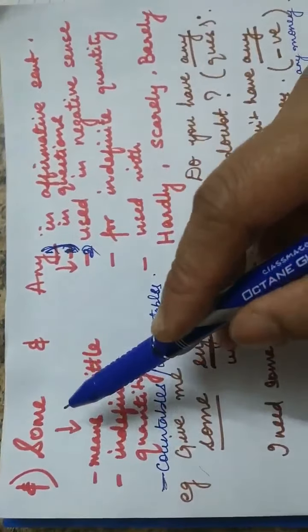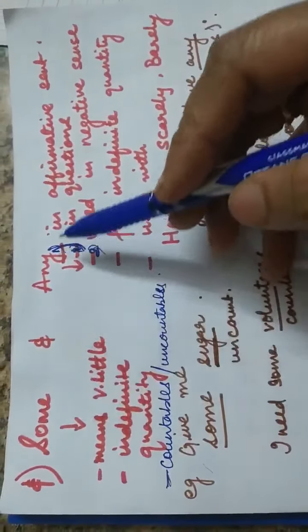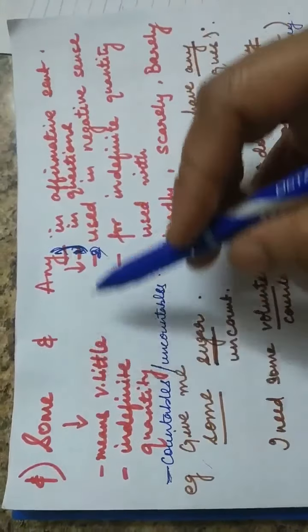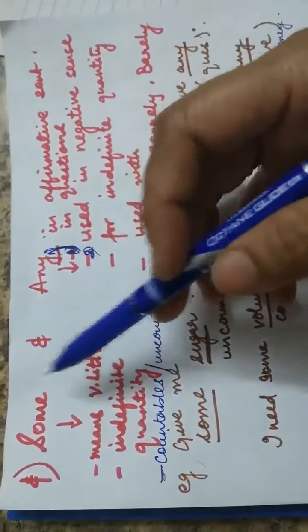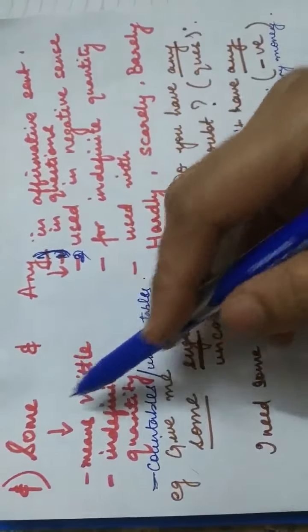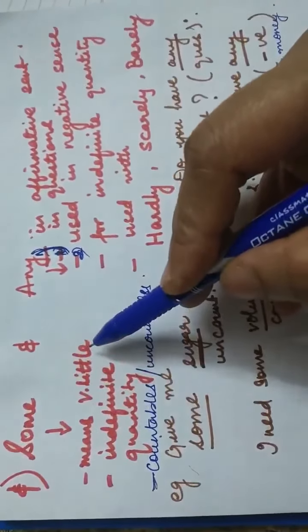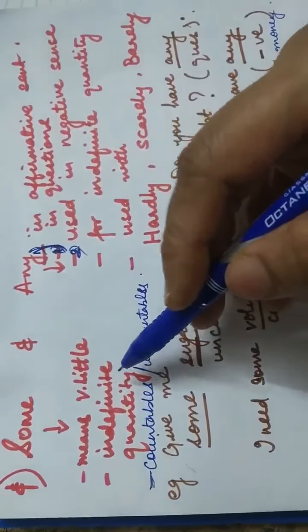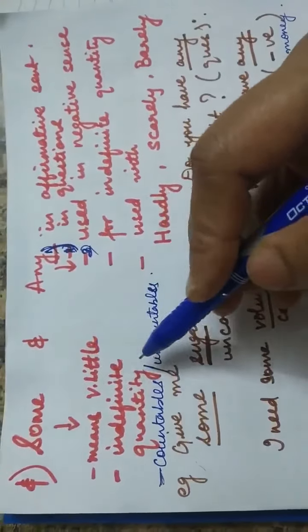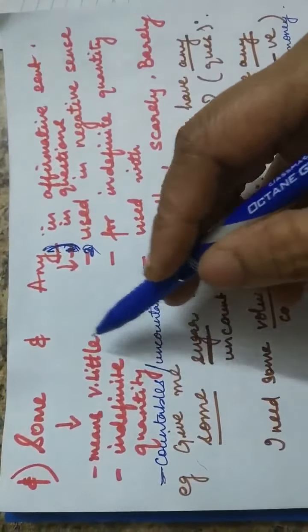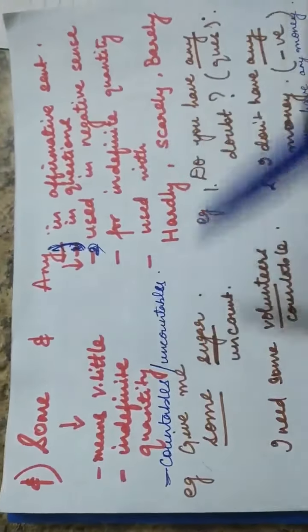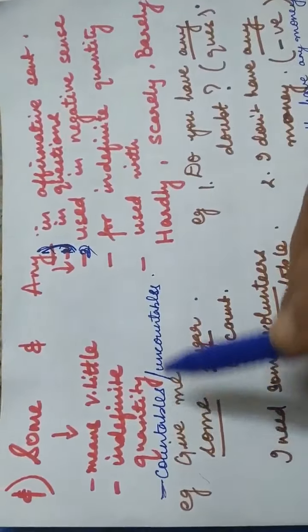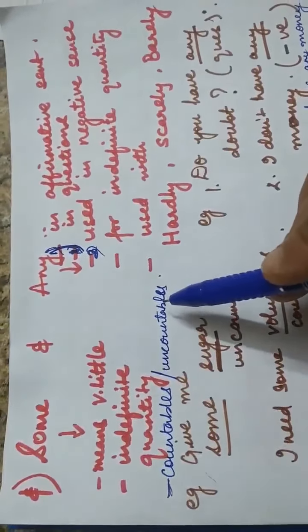The first ones are 'some' and 'any'. Students normally get confused where to use 'some' and where to use 'any'. 'Some' is used for a very little or indefinite quantity. Since it is quantitative, it indicates an indefinite quantity. 'Some' can be used for both countable nouns as well as uncountable nouns.